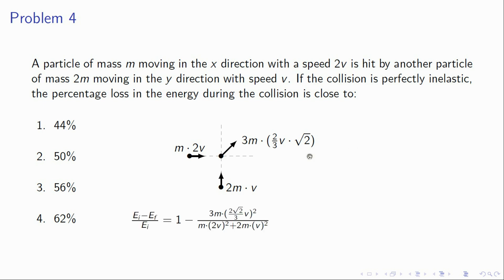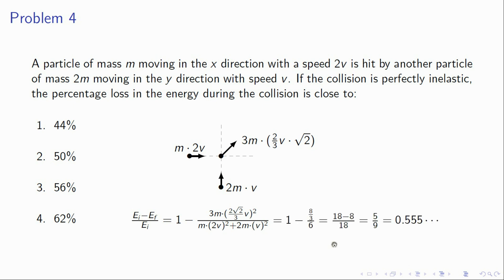Now calculate the change in energy. EF is half of total mass 3m times (2√2v/3)², and EI is half m(2v)² plus half(2m)(v)². After cancelling, EF gives 8/3 in units of mv², and EI gives 6. The fractional loss is 1 minus (8/3)/6 which equals 5/9, approximately 0.5555 — about 56 percent.